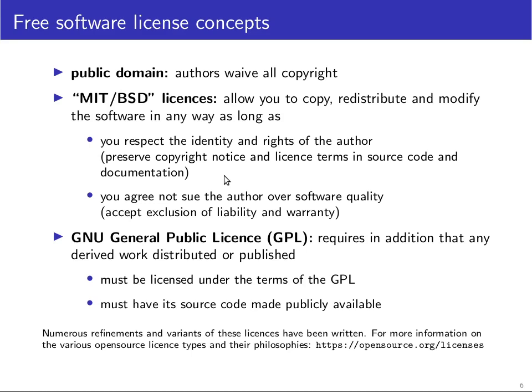Richard Stallman had a much more interesting idea than just formalizing the notion of public domain software like the MIT and BSD licenses did. This became known as the GNU General Public License — a kind of viral open source license that requires that anyone who modifies the software must make those modifications freely available under the same conditions. So if you use any component of GPL-protected software in your own software, your own software again has to be made freely available; you can't make a proprietary fork.